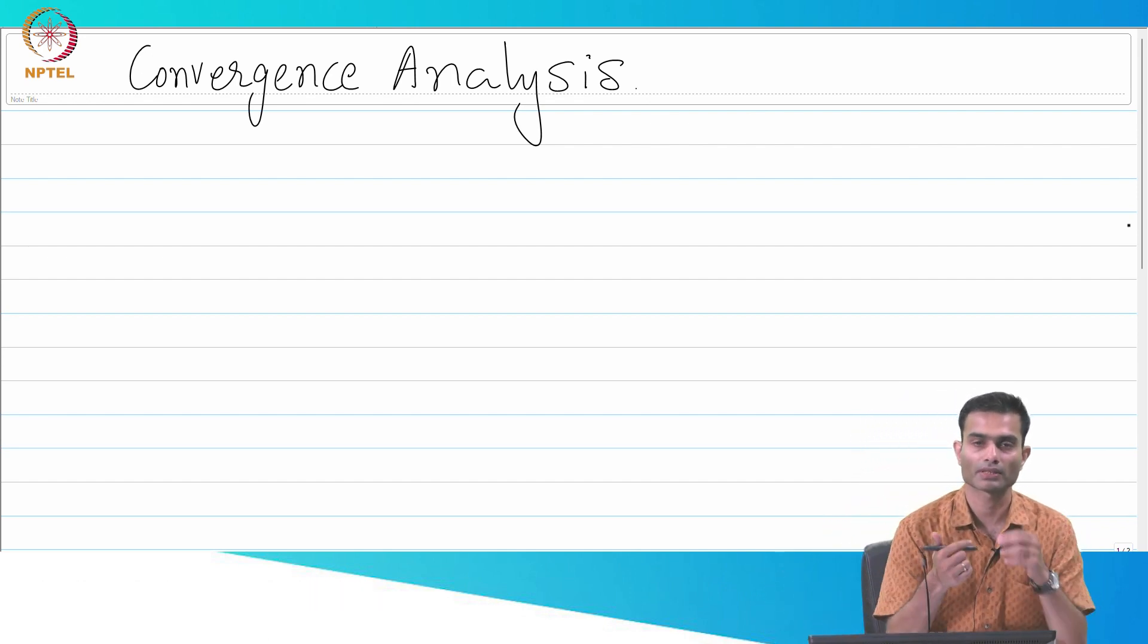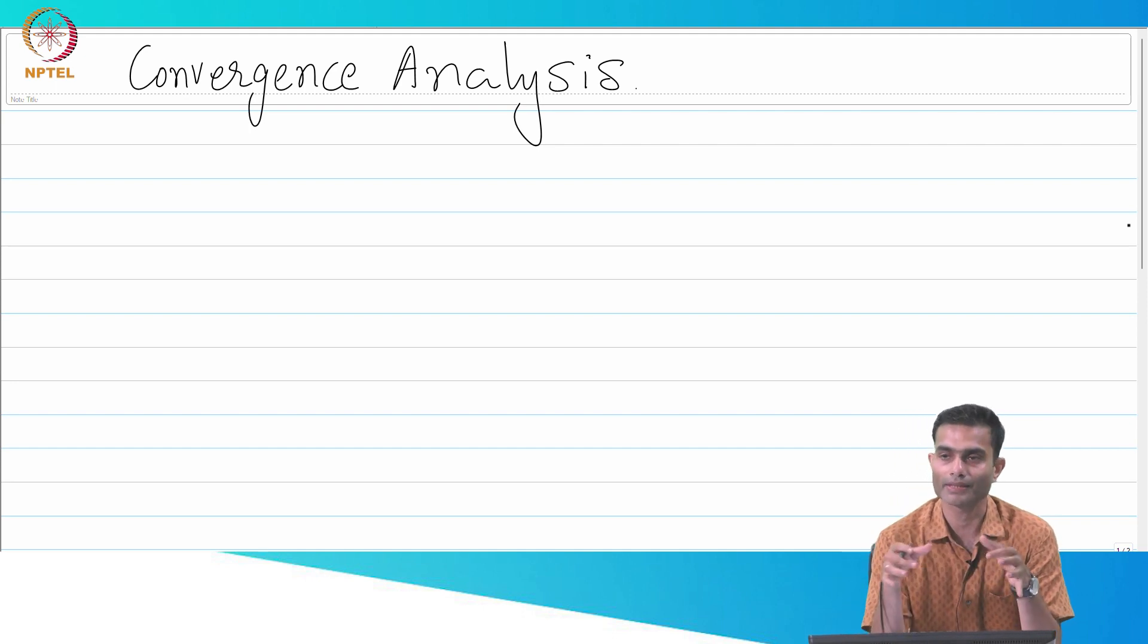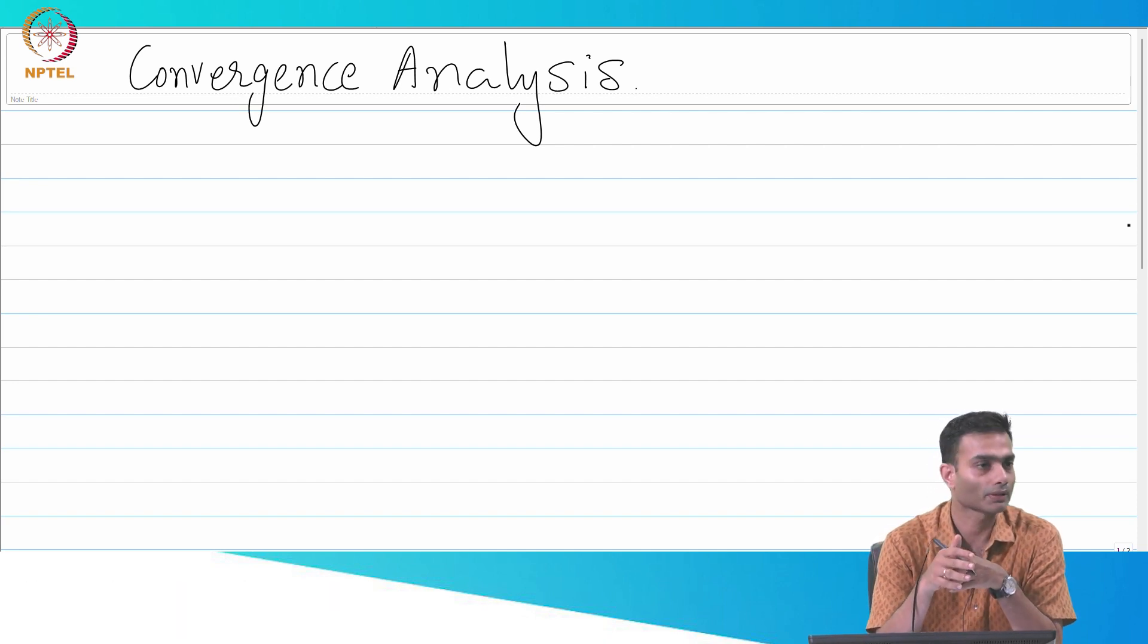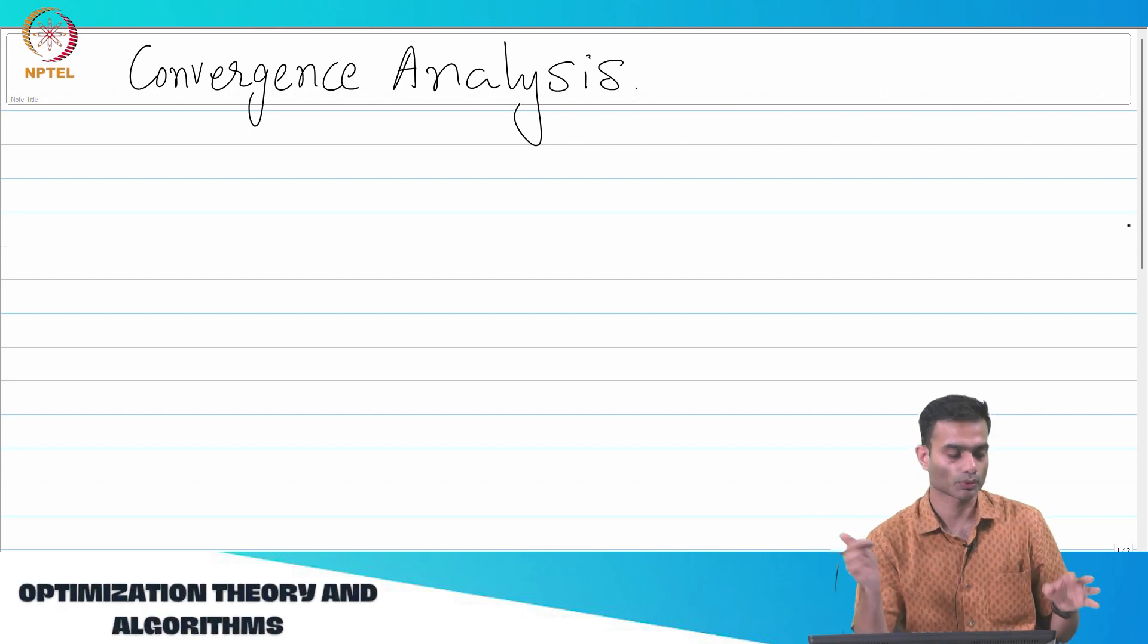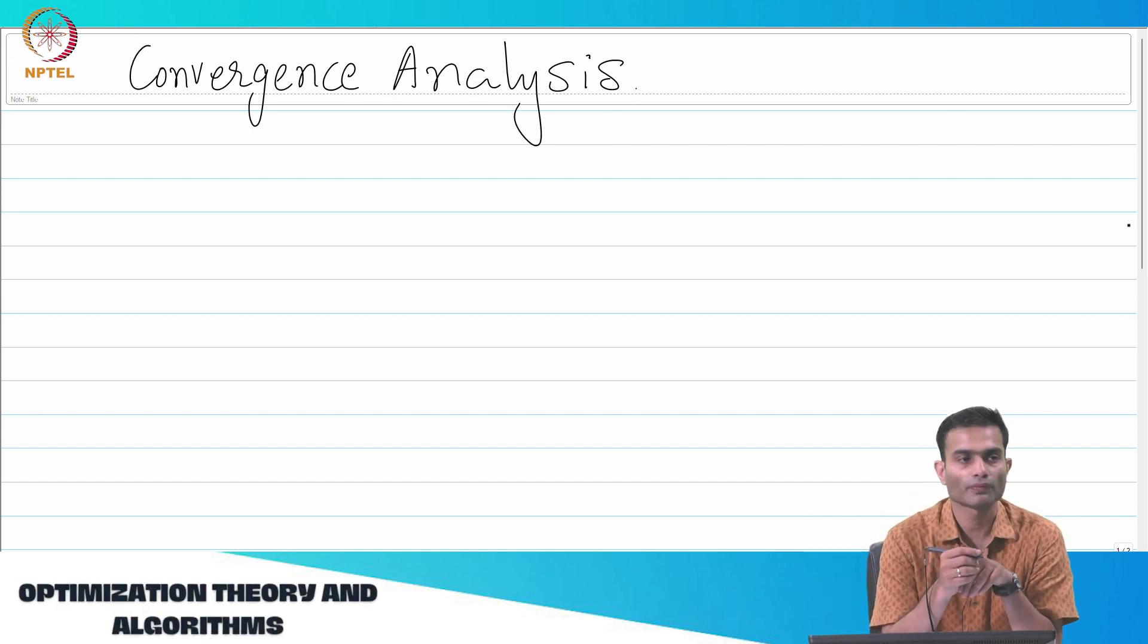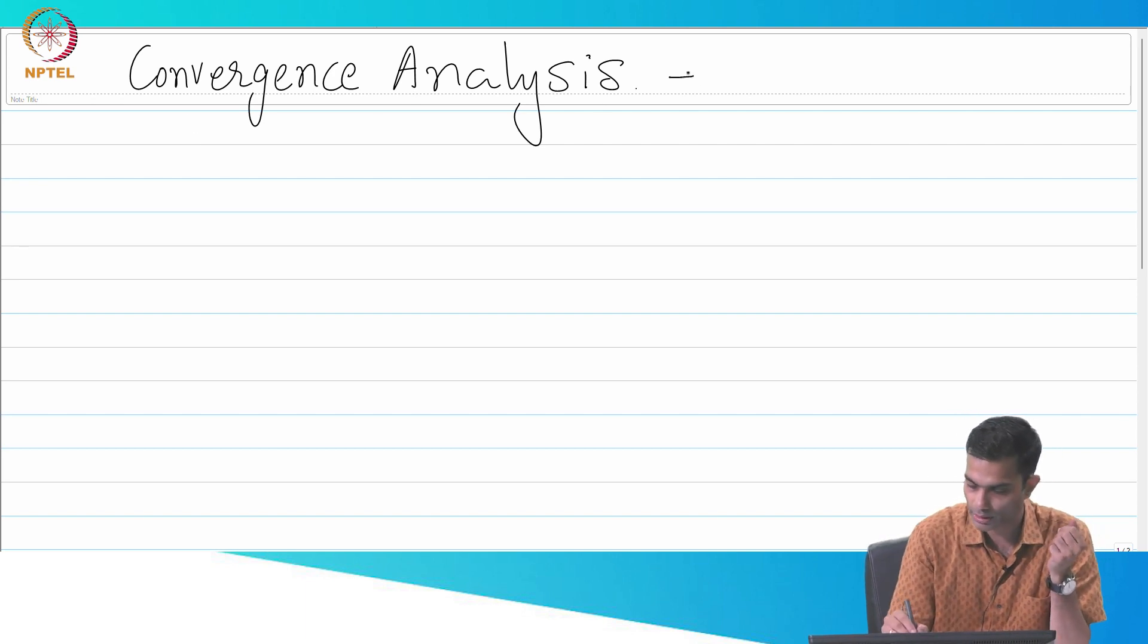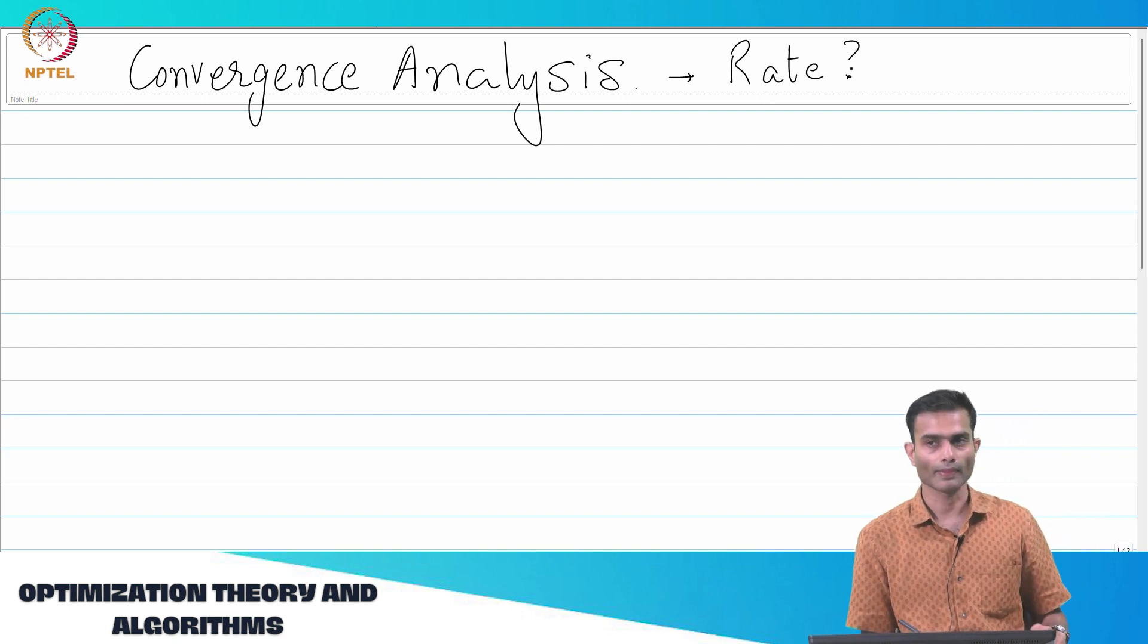Alright, so we will continue our discussion of the convergence of the steepest descent, gradient descent, or any descent method in general. Remember the proof that we gave for convergence did not rely on pk being a gradient descent direction. Pk just had to be a legitimate descent direction, and that's all that was required. So it's applicable to a broader family. Now, we proved that convergence happens. What we haven't figured out yet is at what rate does convergence happen? This discussion is going to be about the rate.